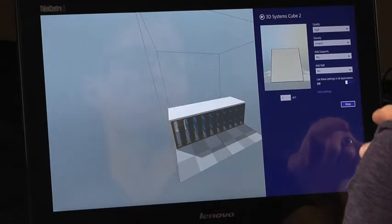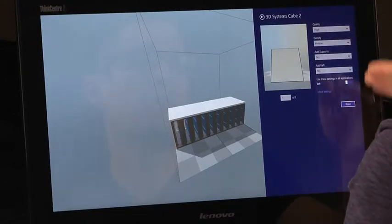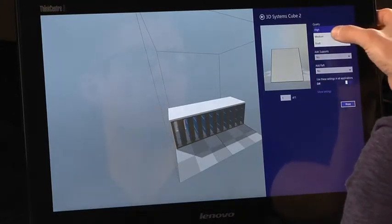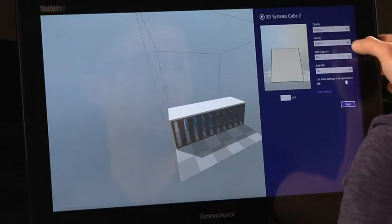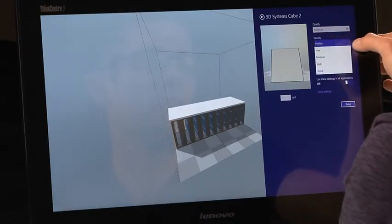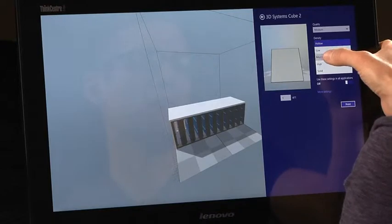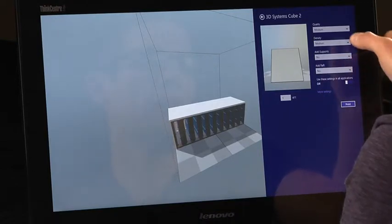I'm then presented with a selection of different options. I can change the print quality. We'll use medium here. I can use the density drop down to change the density setting. I'm going to hit medium there on that.